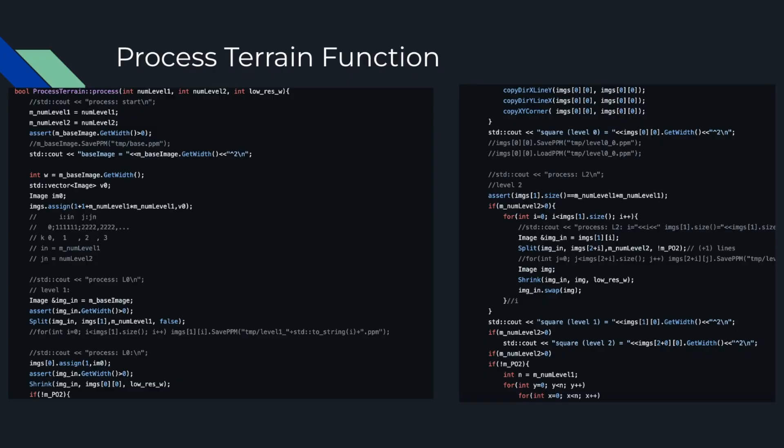The biggest technical achievement in this project was the process terrain function — it was also the hardest to get right. My idea for an infinite terrain was to process terrain data by splitting and shrinking images based on certain parameters and then connecting them together based on boundary conditions. However, when I ran my code I noticed there were always gaps in the image, so the biggest issue was figuring out how to split it. Initially I was doing all of my terrain work in one single process, but I experimented and found that creating two separate levels and doing the splitting on each level was the way to solve the issue.